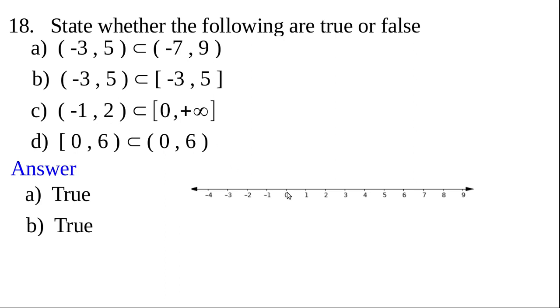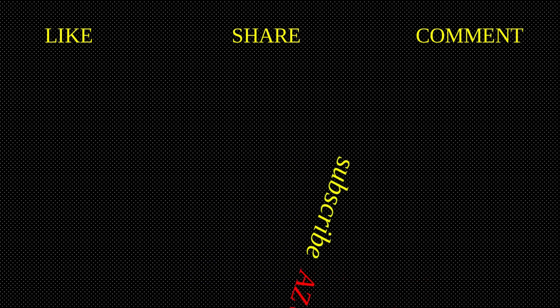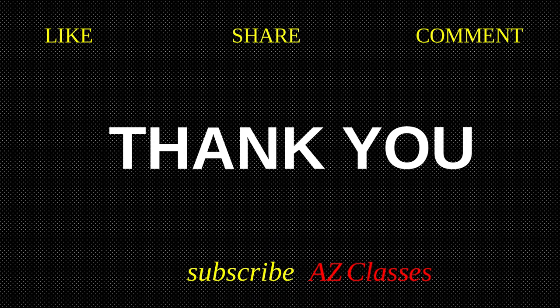In [0, +∞), zero is included and the interval starts from zero; in (−1, 2), numbers less than zero (but greater than minus one) are present. Since those negative numbers are not in [0, +∞), (−1, 2) is not a subset — that statement is false. Today we have learned the beautiful concept of intervals as subsets of real numbers. Hope you all enjoyed the class. Try to learn all topics in time. Thank you for watching, have a nice day!